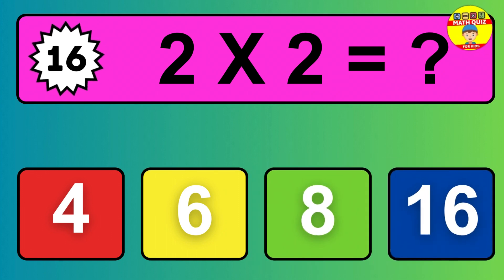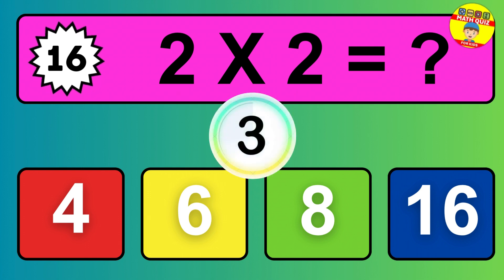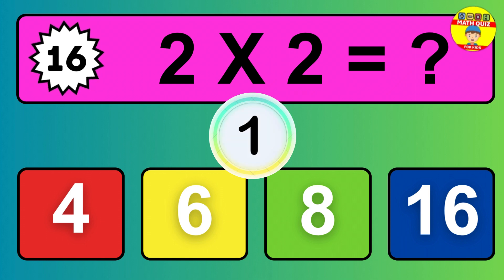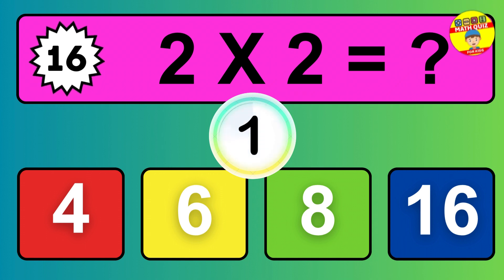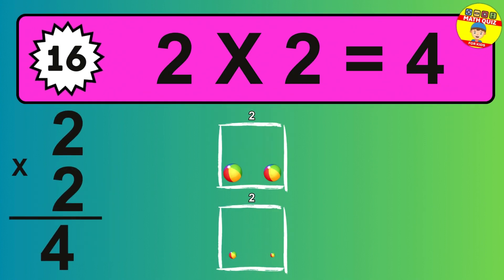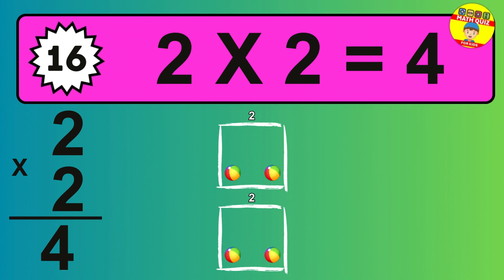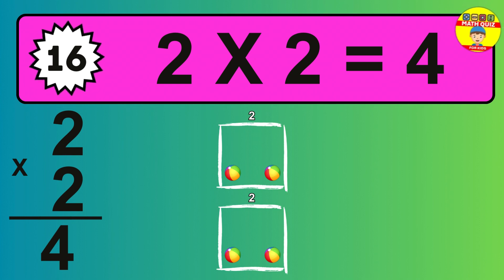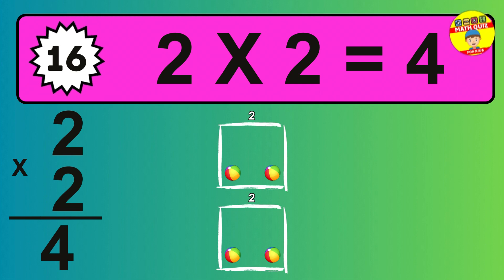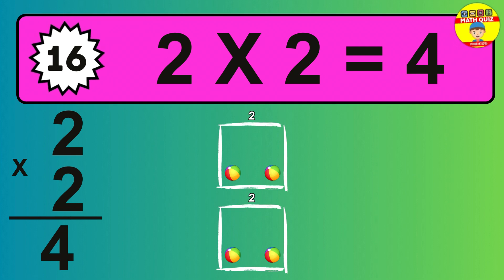Question 16. The answer is 2 times 2 is 4. To calculate, we have 2 groups with 2 balls each one. So how many balls do we have? 4 balls.